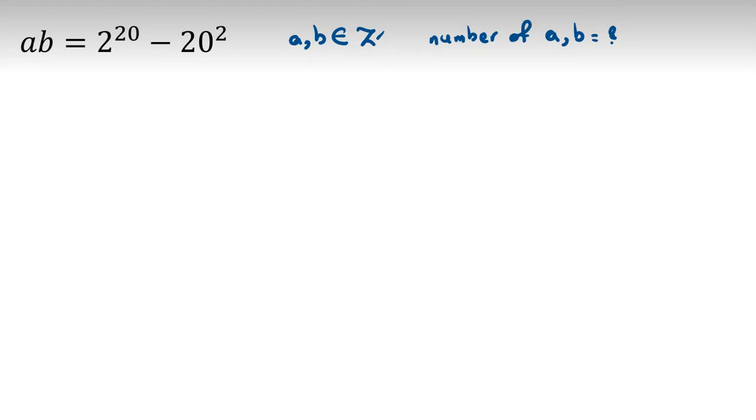AB equals 2 to the 20 minus 20 squared. 2 to the 20 is 2 squared to the 10, or let me tell you this: 2 to the 10.